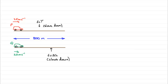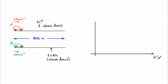In order to draw a speed-time graph for something like this, we need to set up our axes. T is measured in seconds and V is measured in metres per second. T equals 0 at this point.